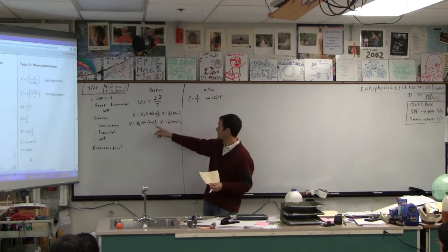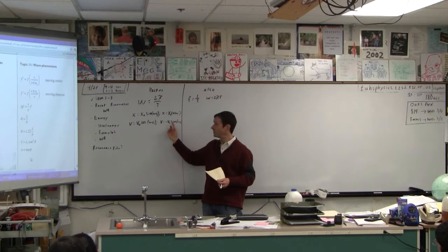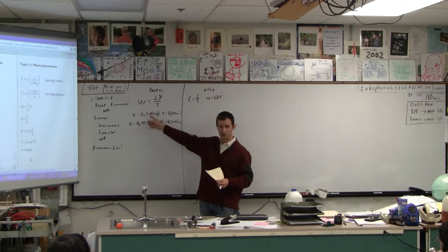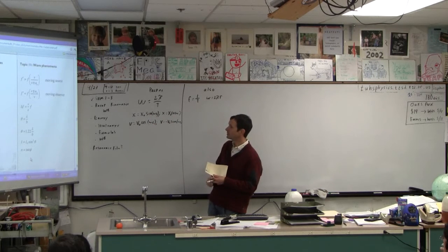And this is because - we went over this last time - if you take the derivative of cosine, you get negative sine. The velocity is the derivative of position. The derivative of this, the slope of this, is this. This is something you'll learn in calculus.